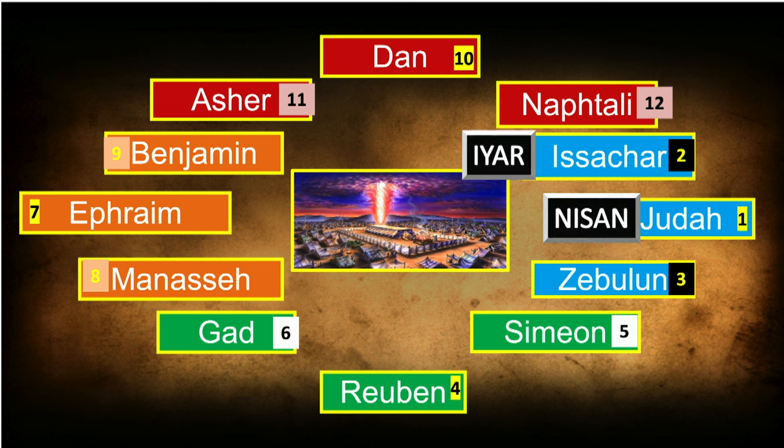In Genesis 15:5, God brought Abraham outside and said, 'Look now toward heaven and count the stars if you can count them — that's how many kids you're going to have.' The second month is the month of Iyar. And in the second month, what happens? We have the counting of the Omer. Isn't that fascinating? God says count the stars, and in the second month we count the Omer.